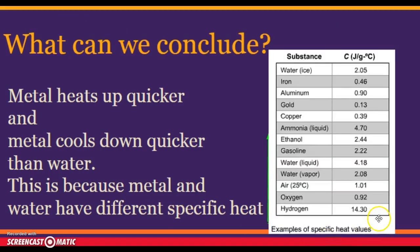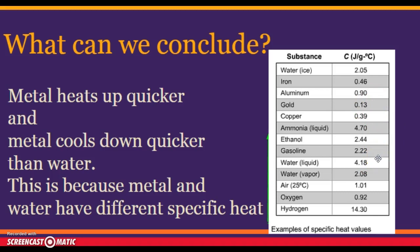Looking at a specific heat table: liquid water has a specific heat of 4.18 joules per gram degree Celsius — it takes 4 joules to raise 1 gram of water 1 degree Celsius. Gold has a specific heat of 0.13. Think of it like money: 13 cents versus $4.18 — a huge difference. Water has a much, much higher specific heat than gold does.